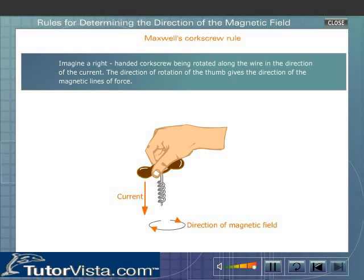The direction of the thumb gives the direction of the magnetic lines of force.